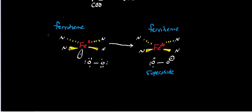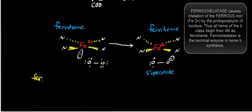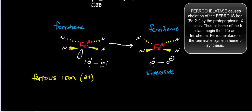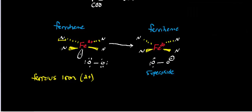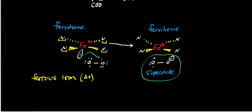Whenever we make heme, we always make it in the ferrous state — the 2+ oxidation state. What can happen is that even when the iron is chelated by the nitrogens of the protoporphyrin 9 moiety, this iron can react with molecular oxygen. An electron can get transferred from the iron 2+ to reduce molecular oxygen into superoxide — a non-enzymatic process — taking the iron from the ferrous into the ferric state.